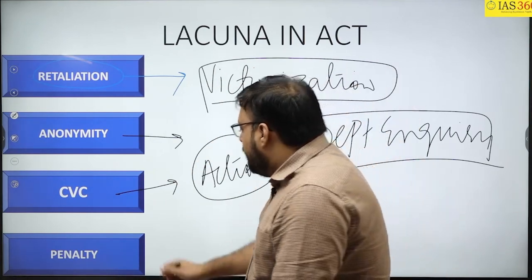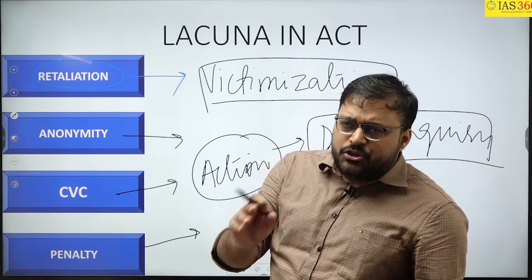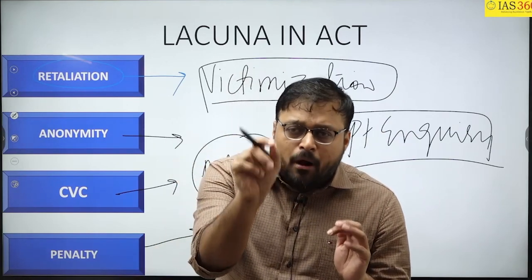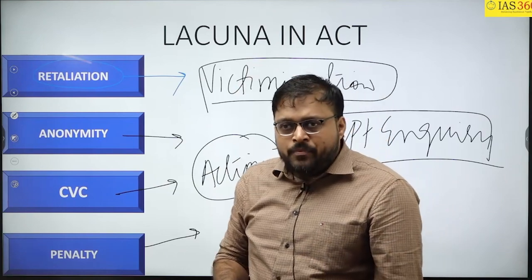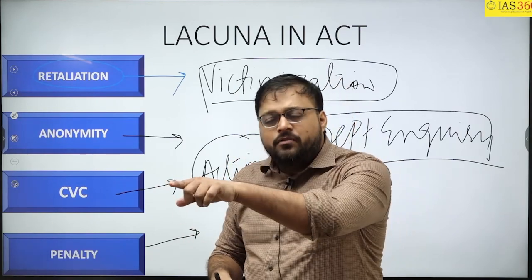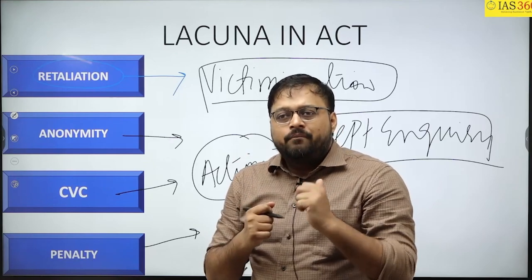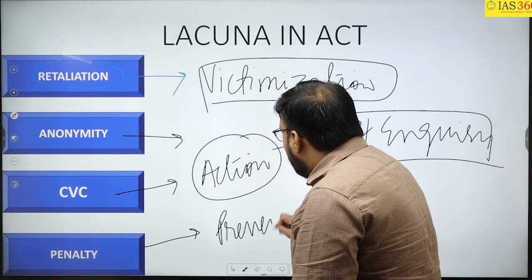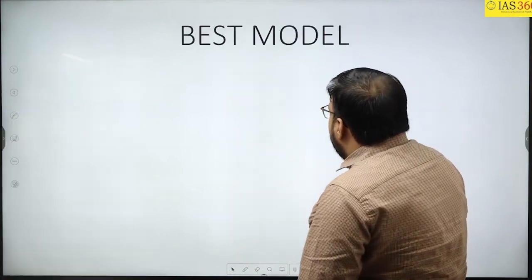If you want to reveal information against your boss but your competent authority is also your boss, what will you do? Regarding penalty: even in the age of Kautilya, Arthashastra suggested that whoever reveals corruption should get one-sixth of the amount involved. But here the act is doing the contrary — instead of giving rewards, a penalty is imposed if false information is furnished, which discourages people from furnishing information at all.